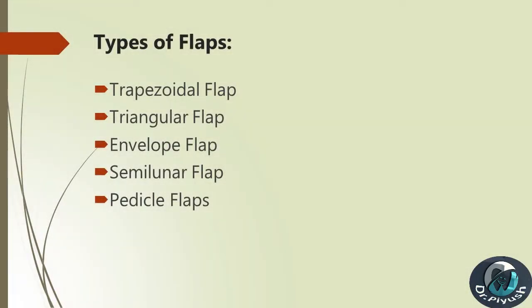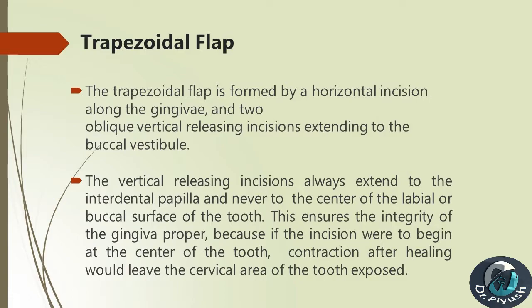Types of flaps: Trapezoidal Flap, Triangular Flap, Envelope Flap, Semilunar Flap, and Pedicle Flaps. The trapezoidal flap is formed by a horizontal incision along the gingiva and two oblique vertical releasing incisions extending to the buccal vestibule. The vertical releasing incisions always extend to the interdental papilla and never to the center of the labial or buccal surface of the tooth.